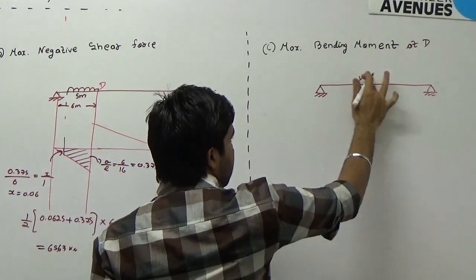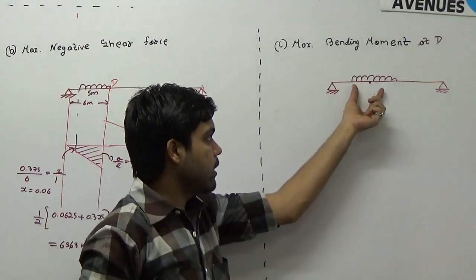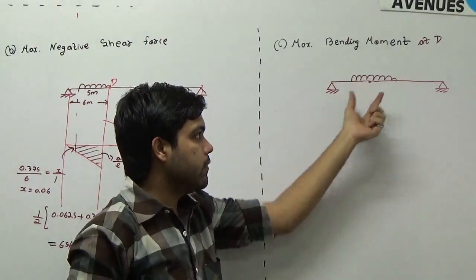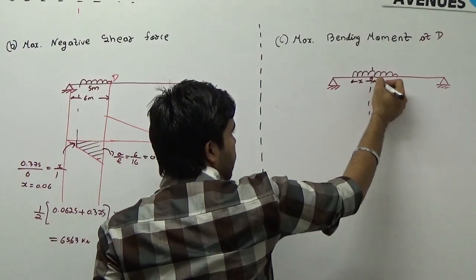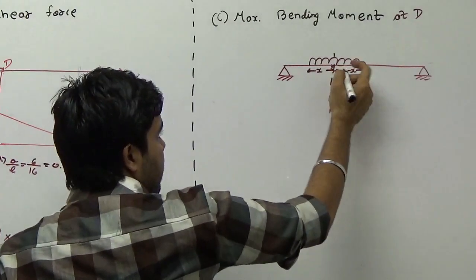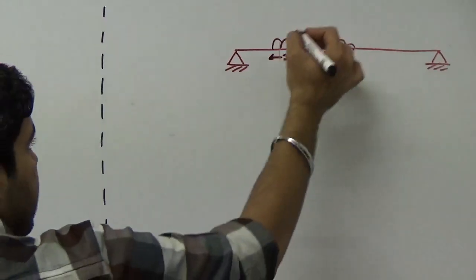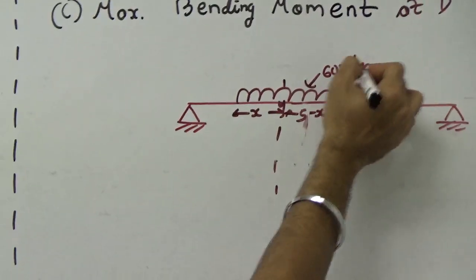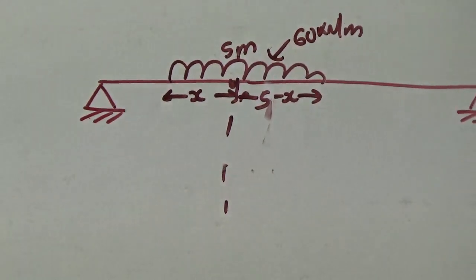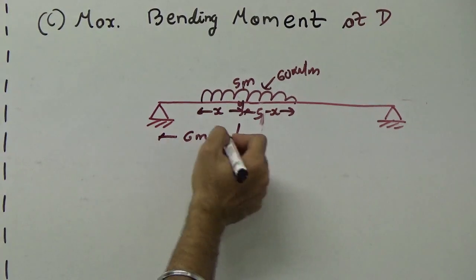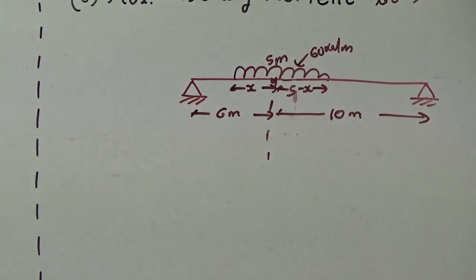Place the UDL straddling point D. Let x be the length of UDL to the left of D, so the length to the right is (5 - x). The distances from D to supports are 6 m (left) and 10 m (right). Using proportion: x/6 = (5 - x)/10, giving 10x = 30 - 6x, so 16x = 30.